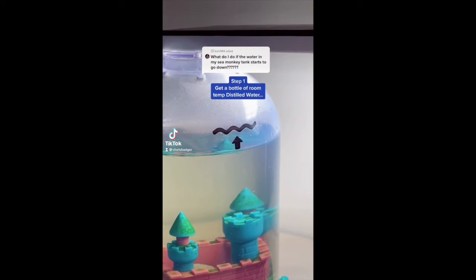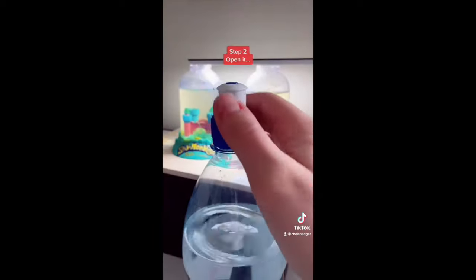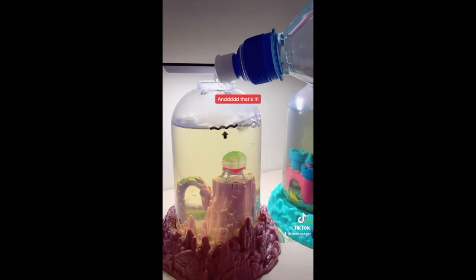What to do when your sea monkey tank water evaporates? Step one: get a bottle of room temp distilled water. Step two: open it. Step three: gently pour it into your sea monkey tank and that's it.